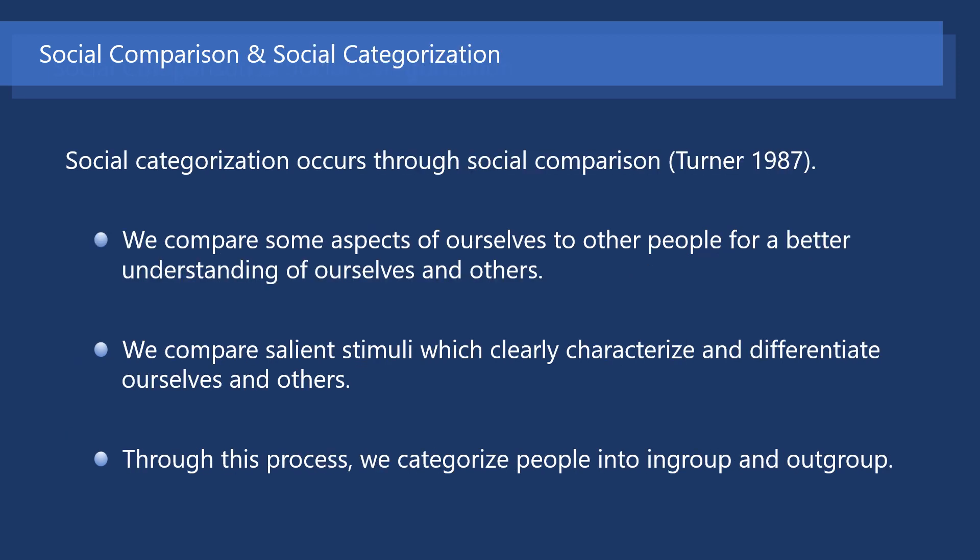According to Turner, social categorization occurs through social comparison. That is, we compare some aspects of ourselves to other people for a better understanding of ourselves and others. In social comparison, we categorize ourselves and others by comparing salient stimuli, which clearly characterize and differentiate ourselves and others. Through this process, we categorize people into in-group members and out-group members.